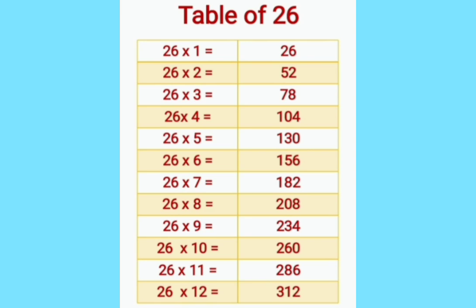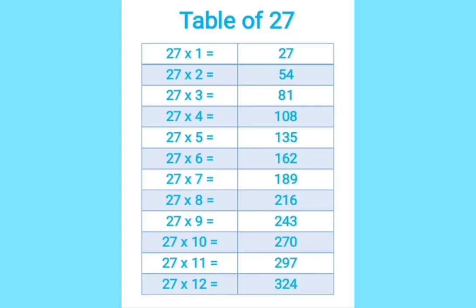27 ones are 27. 27 twos are 54. 27 threes are 81. 27 fours are 108. 27 fives are 135. 27 sixes are 162. 27 sevens are 189. 27 eights are 216. 27 nines are 243. 27 tens are 270. 27 elevens are 297. 27 twelves are 324.